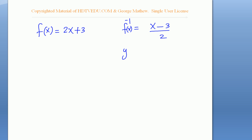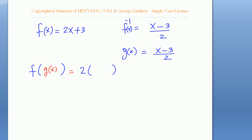Let's call the inverse function g for convenience, so g(x) = (x - 3)/2. Now let's determine f(g(x)). We write f(x) as before: wherever we have x, substitute g(x), plus 3. And g(x) is (x - 3)/2.